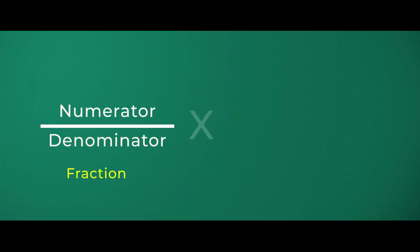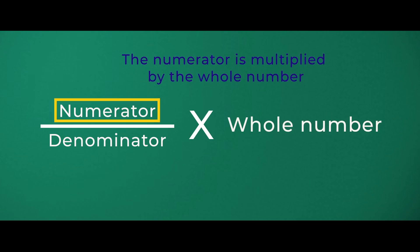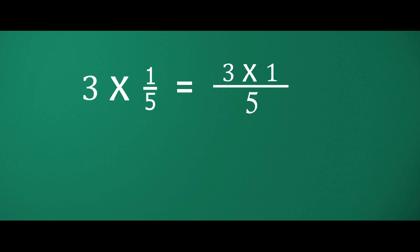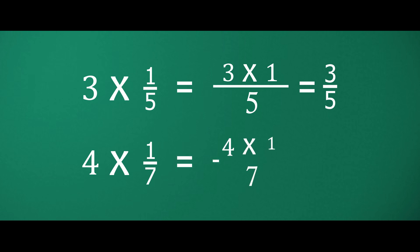When a fraction is multiplied by a whole number, the numerator is multiplied by the whole number and the denominator remains the same. As we are multiplying three times one-fifth, three is the whole number and one is the numerator of the fraction. We multiply the whole number with the numerator and the denominator remains the same, so we get three over five. Another example: four times one-seventh. Four is the whole number, one is the numerator, so our answer is four-sevenths.